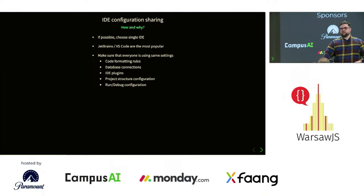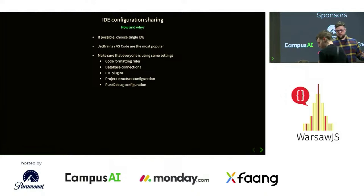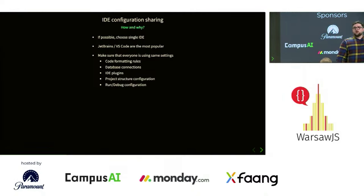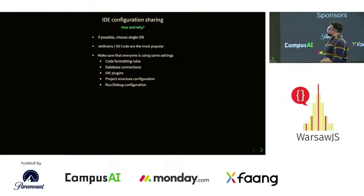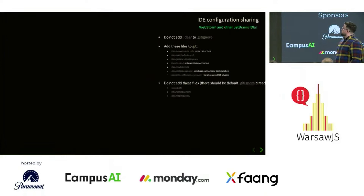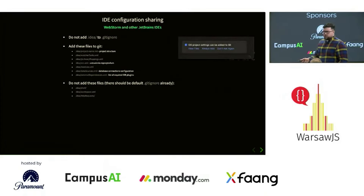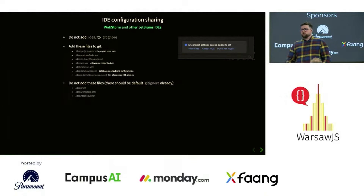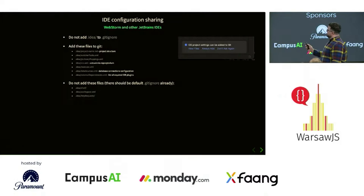The very first thing I'd like you to start with is configuring your IDE or editor. Whether you have a team or are a freelancer with a single project, make sure that everyone is using the same IDE if possible, and that settings are shared between people. For WebStorm and other JetBrains IDEs, I see a lot of projects adding .idea into their gitignore — don't do that. What you should be doing is add some of those files to Git and ignore some of them.